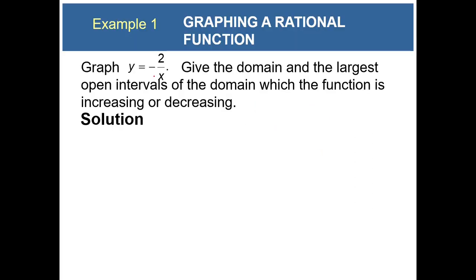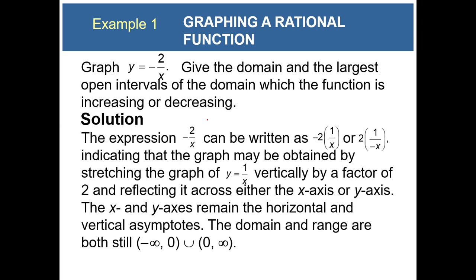Example one: we want to graph y equals negative two over x and give the domain and largest open intervals of the domain on which the function is increasing or decreasing. The expression negative two over x can be written as negative two times one over x, indicating the graph may be obtained by stretching the graph of y equals one over x vertically by a factor of two and reflecting it across either the x-axis or y-axis. The x and y-axes remain the horizontal and vertical asymptotes.